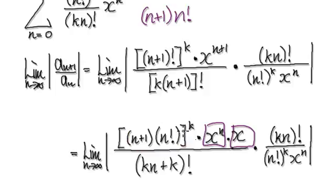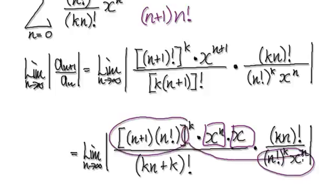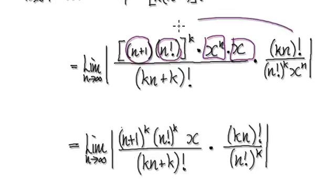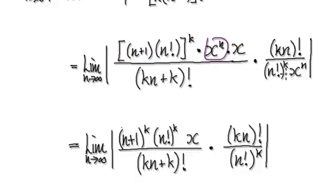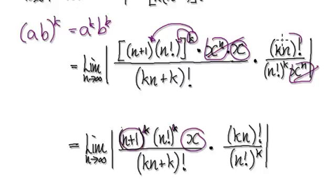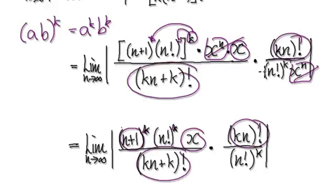You should have a hunch that later on this will somehow cancel out with this, and later on somehow this will cancel out with this. For the time being, let's just imagine this as being (n+1) times n factorial. That will then take you to here. Once you're here, this thing will cancel out with this thing — so these two will go away. And remember, if you have (a + b) to the power of k, that would be a to the power of k times b to the power of k. So that would then be (n+1) to the power of k times (n factorial) to the power of k, and then you've got your x here, and this remains the same.